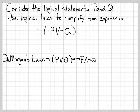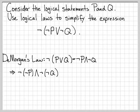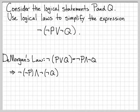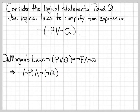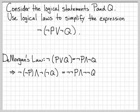We can go ahead and apply DeMorgan's Law to this first expression — distribute the not and switch the or to an and. I've distributed the not to the first term, which was not P, changed the or to an and, and then distributed the not to not Q. After applying DeMorgan's Law and simplifying the parentheses, we can write that as not not P and not not Q.